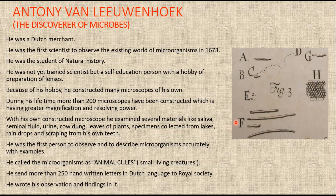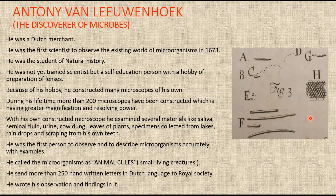He examined blood and discovered tiny microbes which are nothing but RBCs, now called erythrocytes. He also examined yeast and found that they are made up of tiny round particles. Leeuwenhoek's greatest claim to fame in the field of microbiology, however, was his discovery and description of microbes.